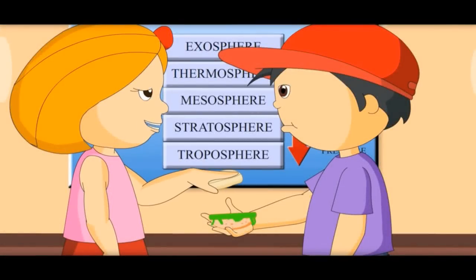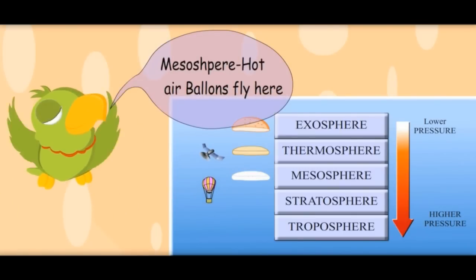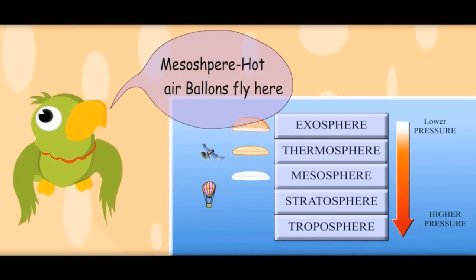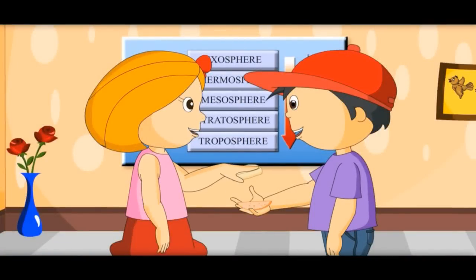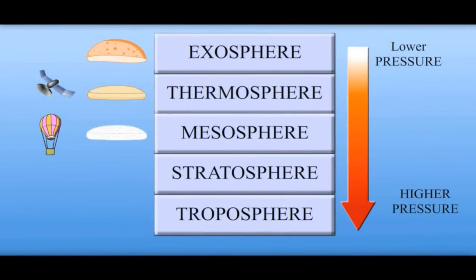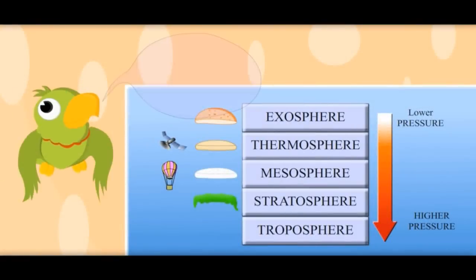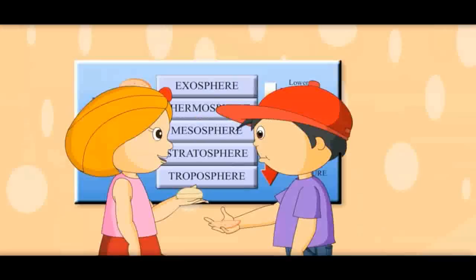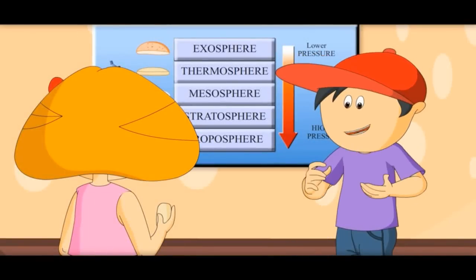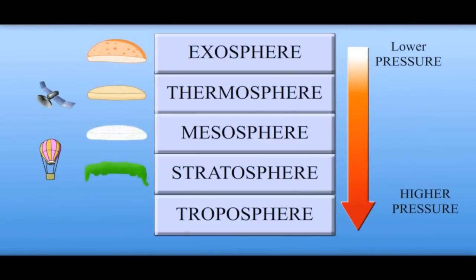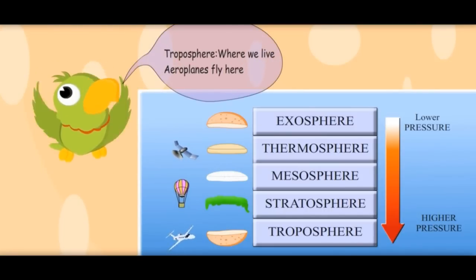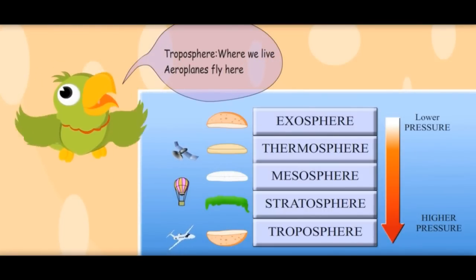This layer is called the mesosphere — hot air balloons go up to this layer. This layer is called the stratosphere. Aeroplanes don't fly here; we need to go to another layer to see where aeroplanes fly. This is the next layer — aeroplanes fly here, and the air here is heaviest. This layer is called the troposphere, where we live and aeroplanes fly.